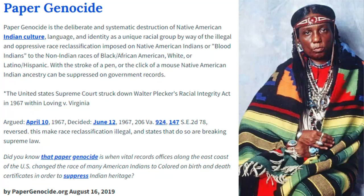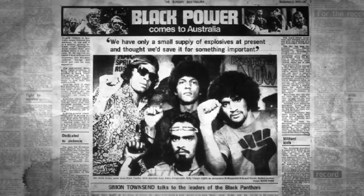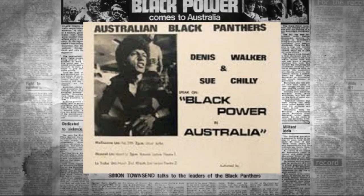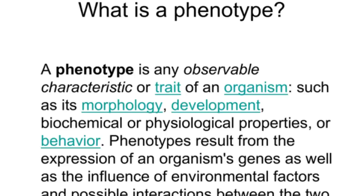What does the term paper genocide mean? Paper genocide is when American Indians are labeled as black, white, colored, mulatto, or even Negro. It's worth noting that paper genocide is not limited to American Indians. In fact, indigenous people from all over the world are affected by paper genocide to this day.